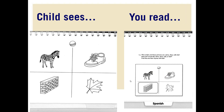Moving to the next page — this is a ball, and the pictures are zebra, shoe, wall, and leaf. 'Does ball sound like zebra, shoe, wall, or leaf? Find the one that rhymes with ball.' I had to do this question recently with children and they did not understand it, so I kept repeating it — maybe two or three times. I didn't tell them the answer; I just kept repeating the exact script, word for word.